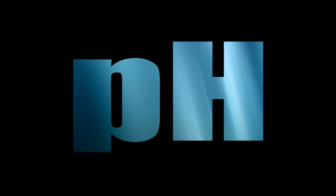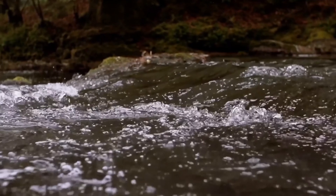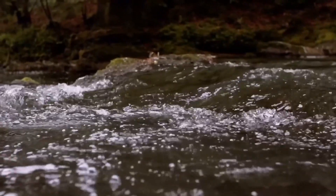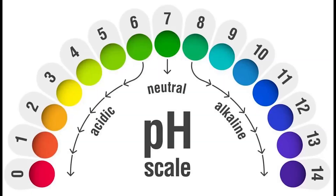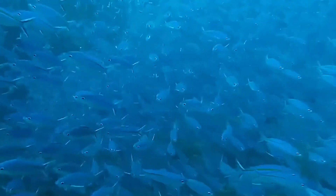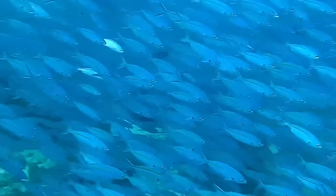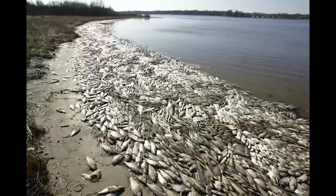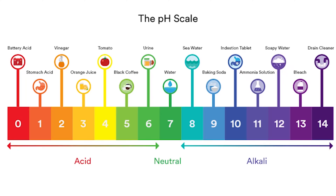pH is a measurement of the acidic or basic quality of water. The pH scale ranges from 0 — very acidic — to 14 — very basic — with 7 being neutral. All living things in and around fresh water have adapted to a specific pH level and may die, stop reproducing, or move away if the pH is too high (basic) or too low (acidic). Most plants and animals prefer a pH range of 6.5 to 8.0.